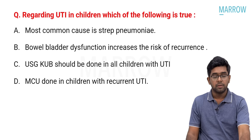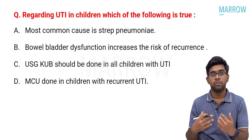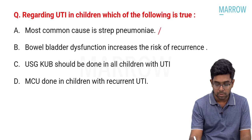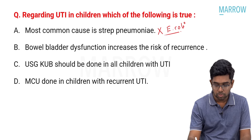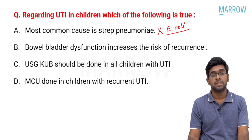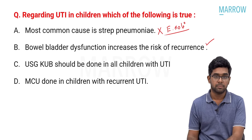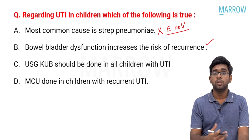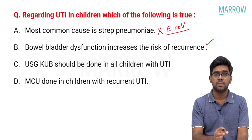Regarding urinary tract infection in children — which of the following is true? The most common cause is E. coli, not Streptococcus pneumoniae. Bowel-bladder dysfunction increases the risk of recurrence — absolutely true. In children with constipation there is increased risk of recurrent UTI, and school-going children who hold urine for long periods can develop bladder dysfunction predisposing to recurrent UTI.